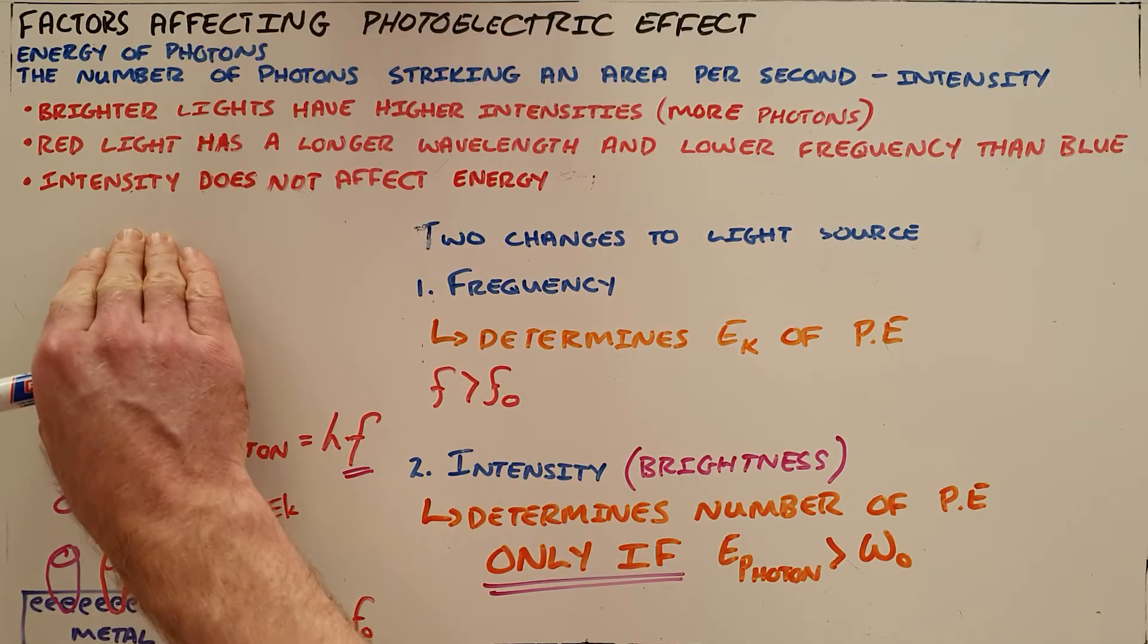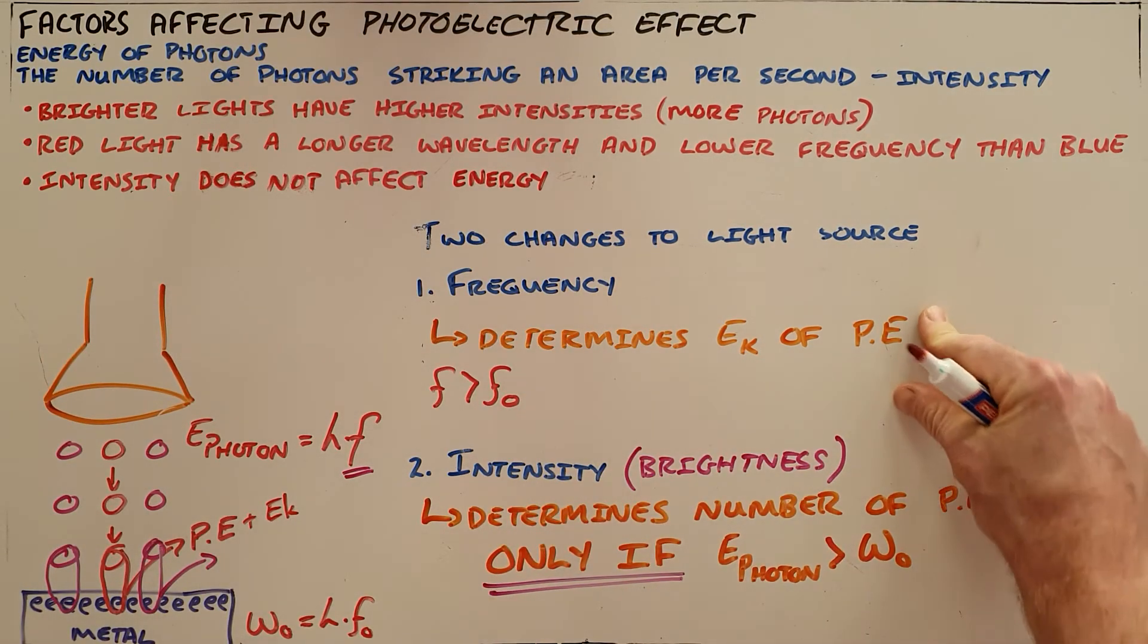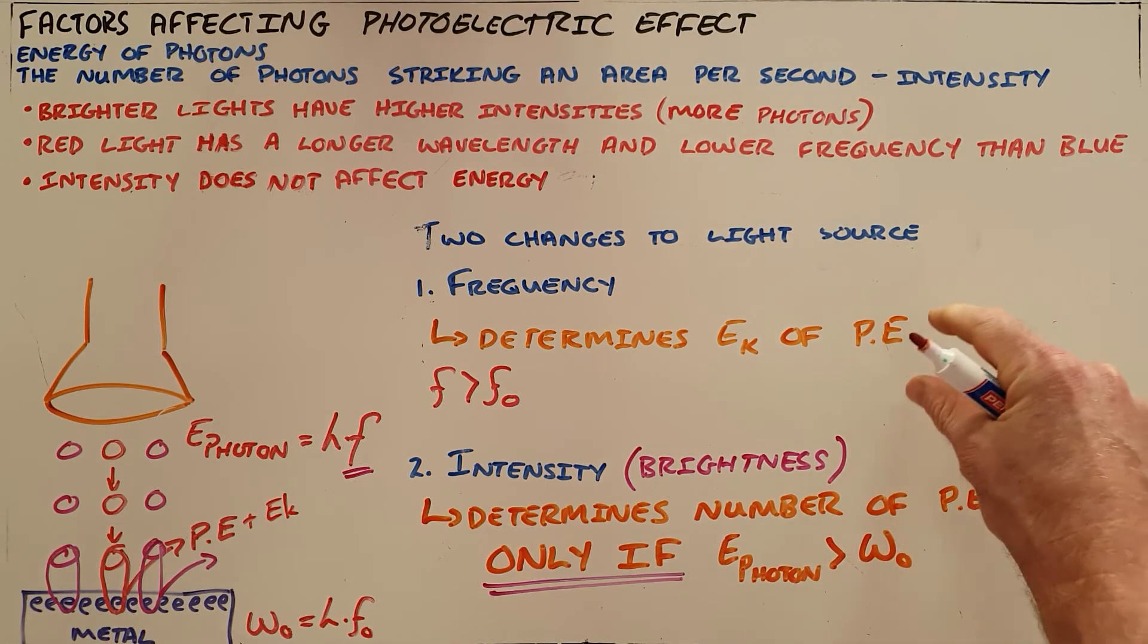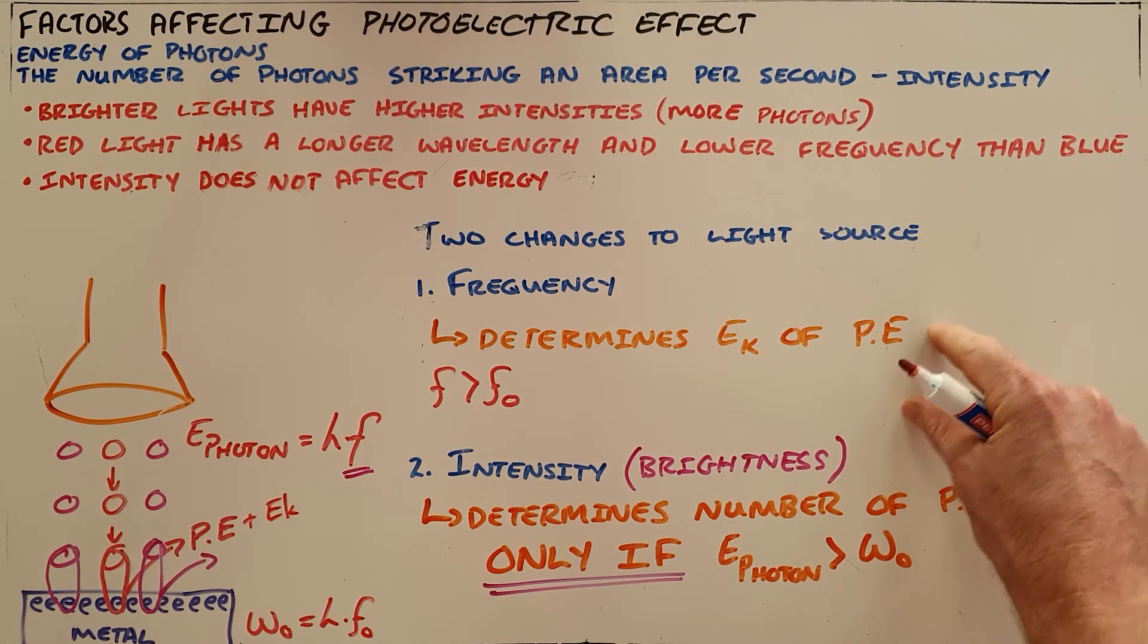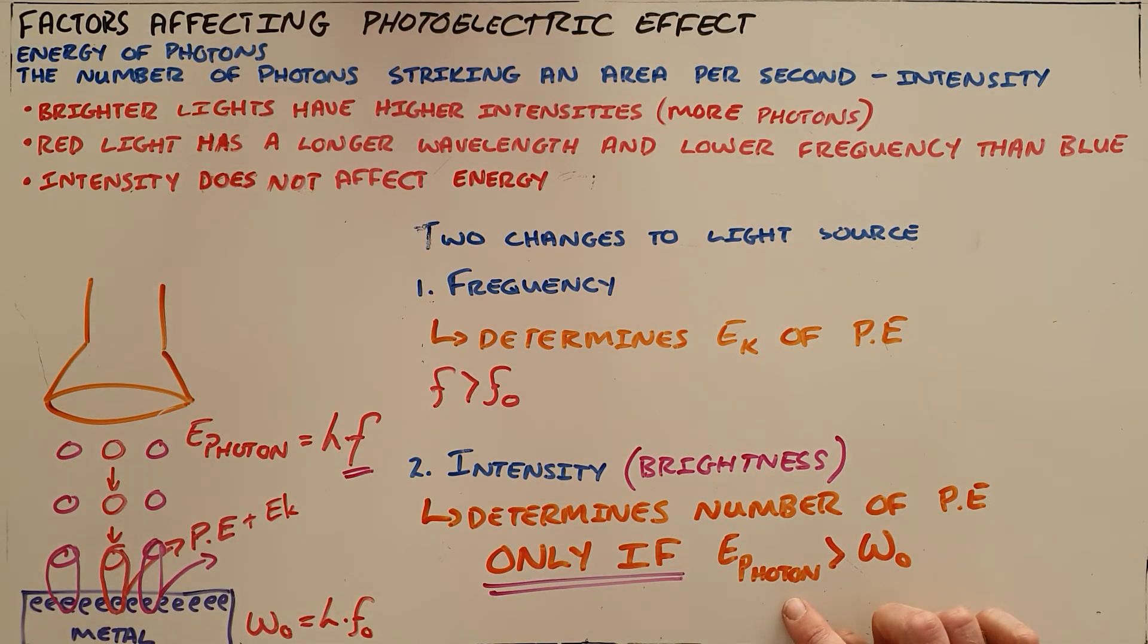So it's very important to see here that a frequency change affects only the energy of a photoelectron: whether or not it has enough energy to escape, once it can escape how much kinetic energy it has. Whereas an intensity change affects only the number of photoelectrons. If the photon energy is greater than the work function, then increasing the intensity will increase the number of photoelectrons that are ejected per second.